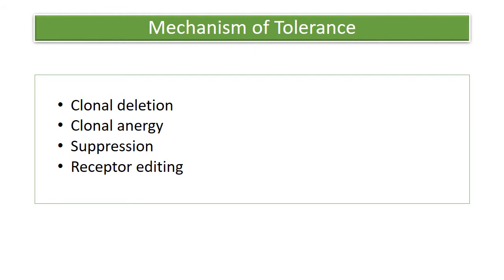Immune tolerance can be achieved by many possible mechanisms: clonal deletion, clonal anergy, suppression of immune cells, and receptor editing — especially on the B cells.